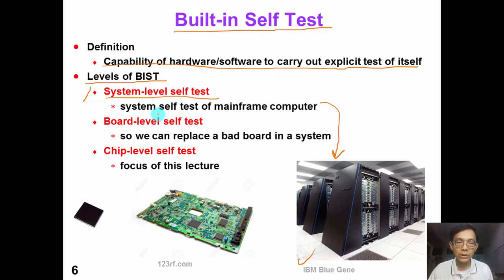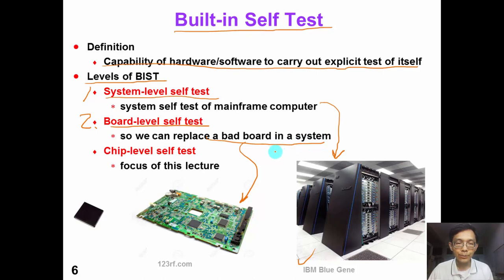This is what we call system level self-test. In the second level, board level self-test, an electronic board like this one should be able to test itself so that we can identify or even replace a defective board in a big system. And finally, chip level self-test — a smart chip like this should be able to test itself. This is the focus of this lecture.